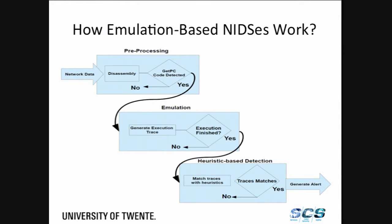Here's how a typical emulation-based network intrusion detection system works. First, there is a preprocessing step where you disassemble the network traffic and try to figure out if there is any kind of code called get PC code, because most polymorphic shellcodes have to refer to themselves at some point and need to know their absolute address in memory. Once you detect the get PC pattern, you then emulate that network stream and try to generate an execution pattern based on those bytes. Finally, you match the behaviors or patterns generated against some heuristics — that's how emulation-based NIDS work.